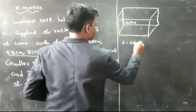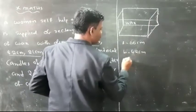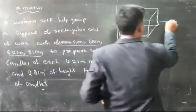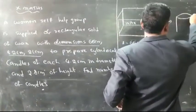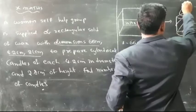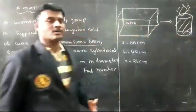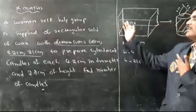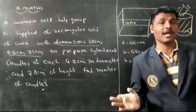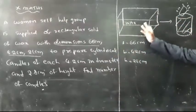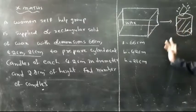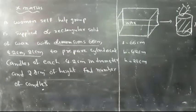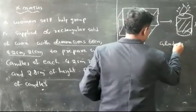The length is 66 centimeters, breadth is 42 centimeters, and height is 21 centimeters. By using the wax they are preparing candles in the shape of a cylinder. From these facts, how many cylindrical candles can they prepare? We don't know how many cylinders they prepare, so let the number of cylinders be k.